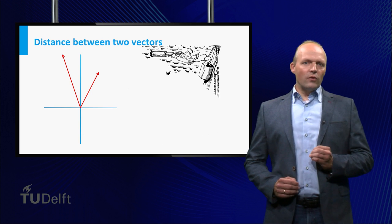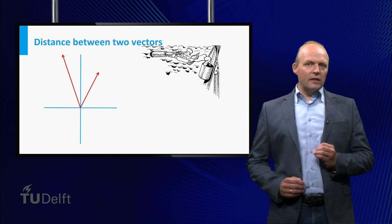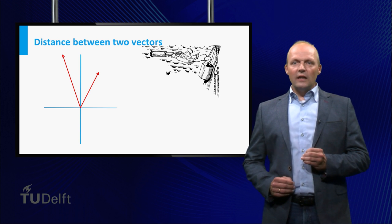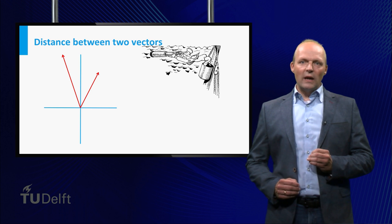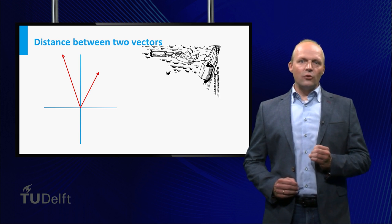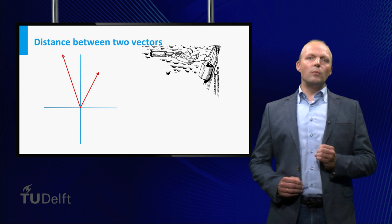Besides the length of a vector, one can also define the distance between two vectors, u and v. It is defined as the norm of that difference u minus v. This distance is exactly the same as the Euclidean distance between the two endpoints.